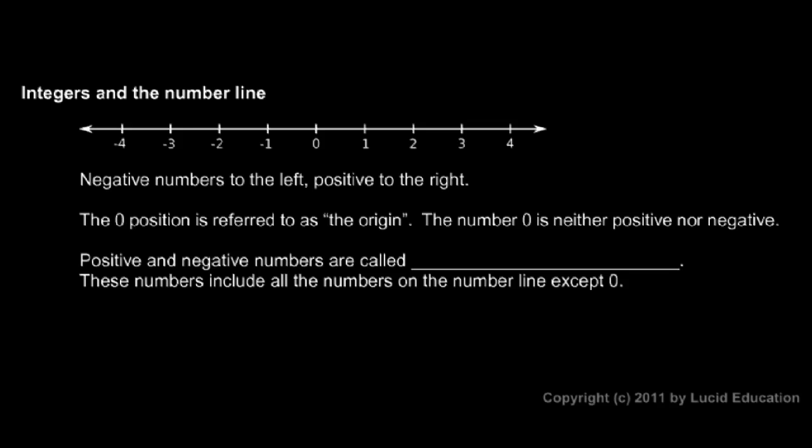On the number line we typically have negative numbers to the left and positive numbers to the right, and right in the middle the number zero. That position is referred to as the origin, and the number zero isn't positive or negative.